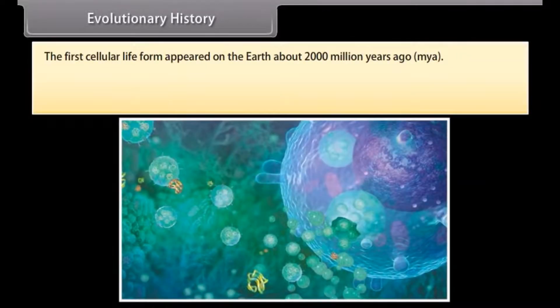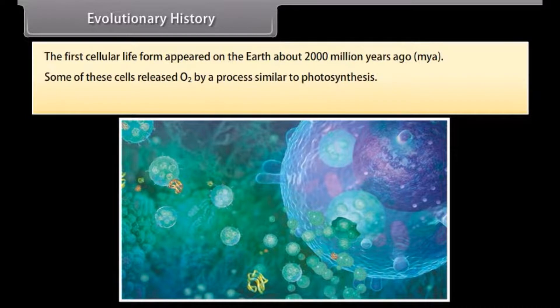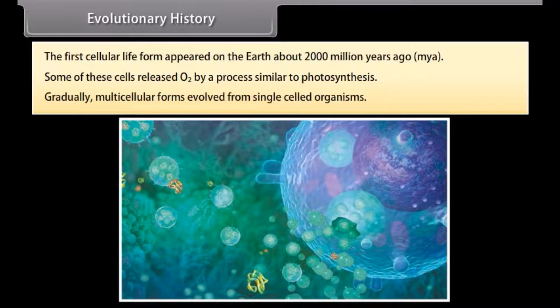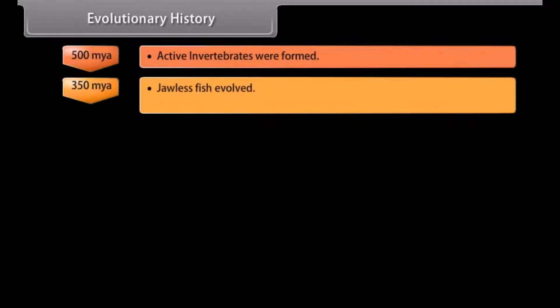The first cellular life form appeared on earth about 2,000 million years ago (MYA). Some of these cells released oxygen by a process similar to photosynthesis. Gradually, multicellular forms evolved from single-celled organisms. Further evolution can be traced through successive stages.